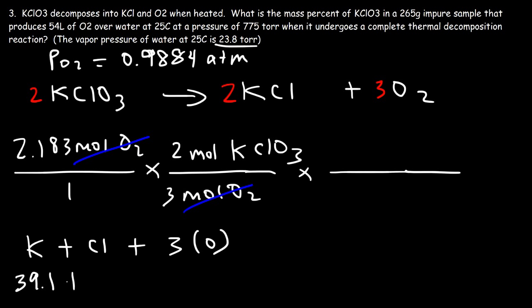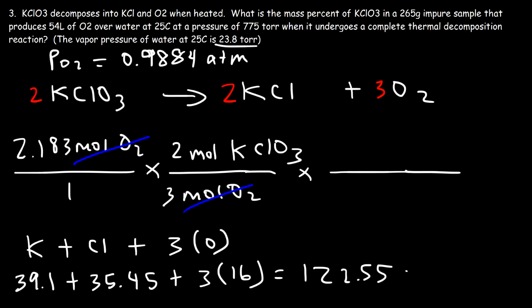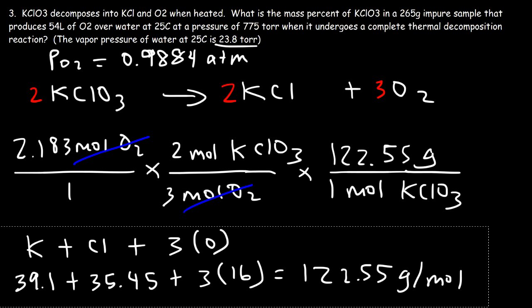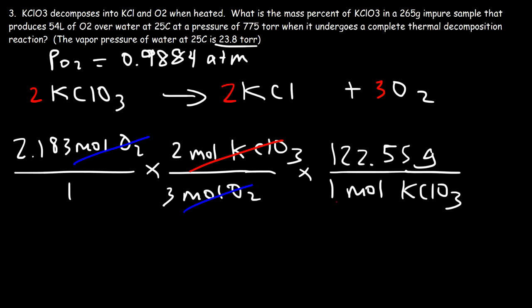To find the molar mass of KClO3: K is 39.1, Cl is 35.45, and 3 oxygen atoms at 16 each gives 48. Adding these: 39.1 + 35.45 + 48 = 122.55 g/mol. So the mass of KClO3 = 2.183 × (2/3) × 122.55 = 178.35 grams.